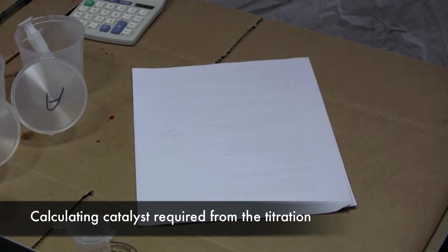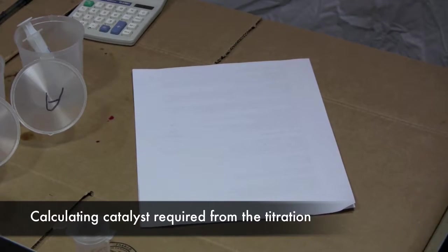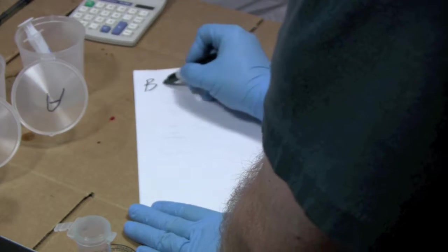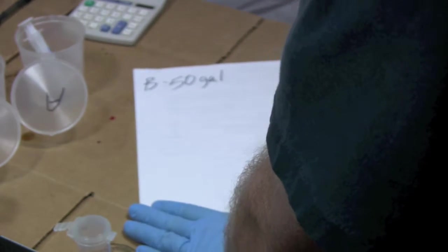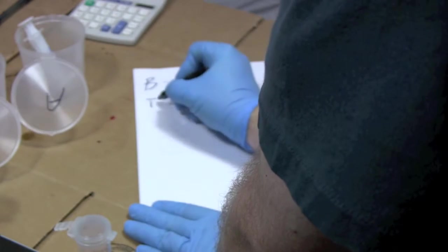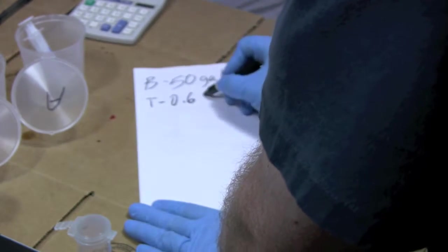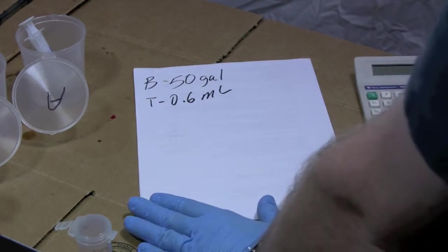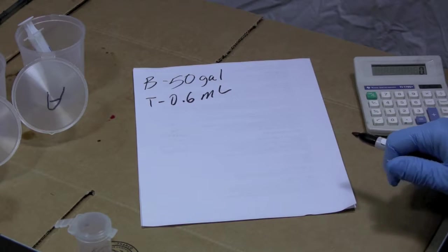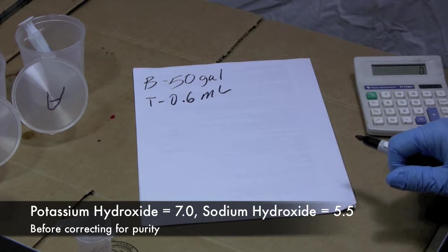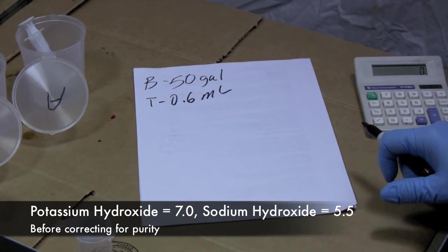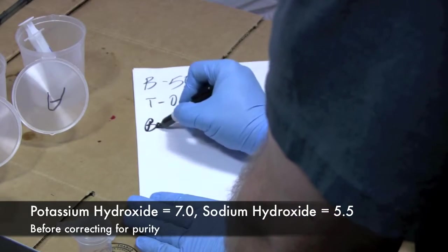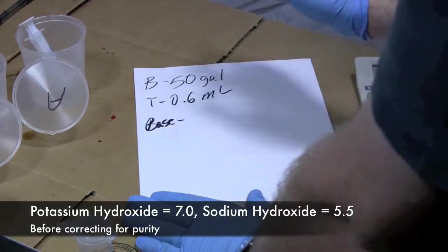Now it's time to figure out how much catalyst we're going to use when we make biodiesel. We're going to suggest that we're going to make a 50 gallon batch. So our batch size is going to be equal to 50 gallons. We know that this oil titrated at 0.6 milliliters. And it's time to figure things out. We know that if we're using brand new oil, it will take 7.0 grams of potassium hydroxide per liter of oil to make it. So I'm going to call this my base. The oil was brand new how much I would use.